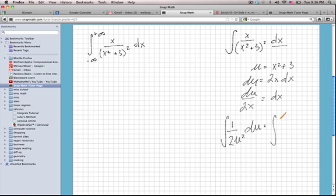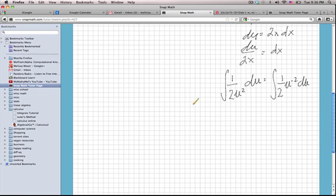This is equivalent to the integral 1 half u to the negative 2 du, which is very easy to integrate.